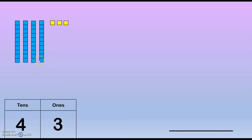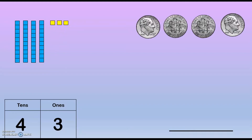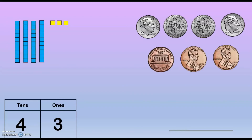We ended right there. Now we count the ones: 41, 42, 43. A dime is just like those 10 sticks — they're both worth 10. Pennies are worth one cent, and they're just like the yellow blocks.